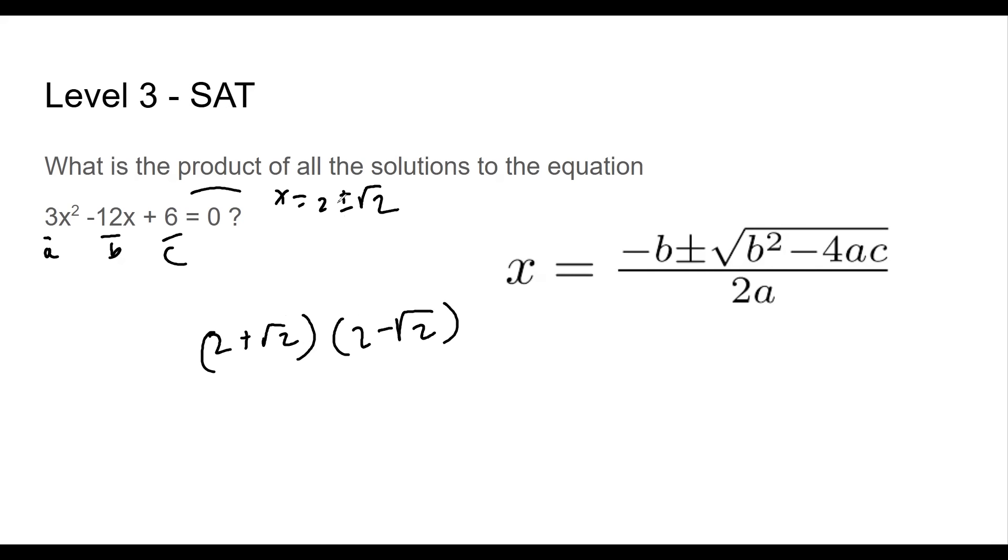All right, the plus or minus just means it's two solutions. One's 2 plus this. One's 2 minus this. All right, so now I'm not going to do anything tricky here. I'm just going to go ahead and multiply everything. So 2 times 2 is 4.